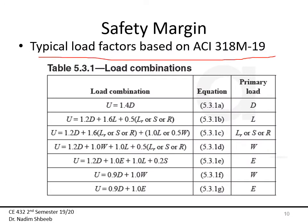Now I'm going to start with the ultimate load. Here is the load combination table from ACI. The first combination is U = 1.4D, where D is dead load and the gamma factor is 1.4. The second combination for primary loads of dead load, live load, roof/snow/rain is: U = 1.2D + 1.6L + 0.5S, with those as the gamma coefficients.